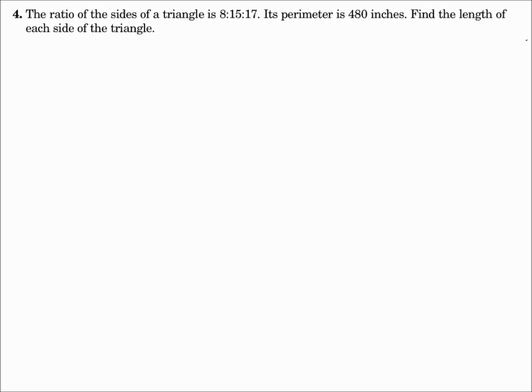Number four. The ratio of the sides of a triangle is 8 to 15 to 17. Its perimeter is 480 inches. Find the length of each side of the triangle. Well, 8 to 15 to 17 is reduced. So we need to un-reduce that. When it was reduced, each of those terms was divided by the same number.